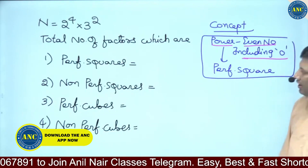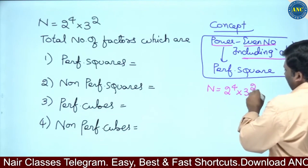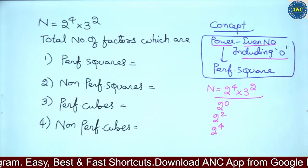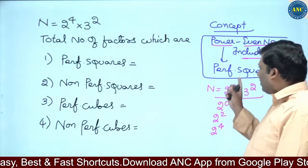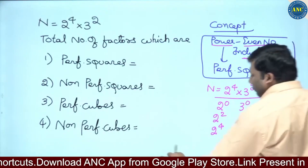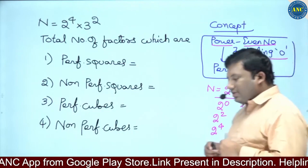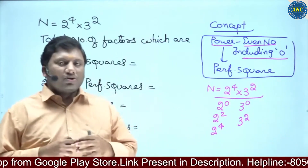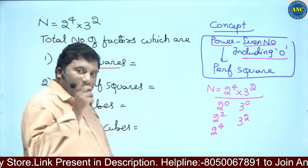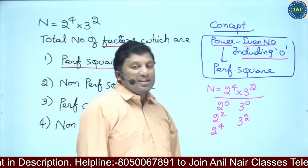For n = 2⁴ × 3², power should be an even number. So for the factor of 2, we can take 2⁰, 2², 2⁴ — but not 2¹ or 2³, because the power must be even including zero. For the factor of 3, we take 3⁰ and 3². These are the only valid cases for perfect square factors.